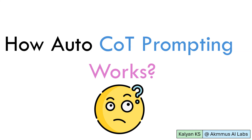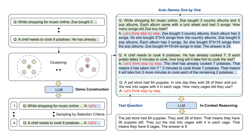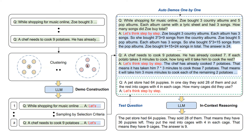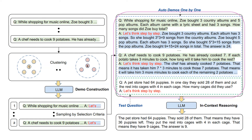Now let us see how Auto-COT prompting works. Auto-COT prompting involves three steps. The first step involves selection of diversified questions — that is, questions are clustered, and then representative questions are selected from each cluster, so that the selected questions will be diverse. The second step involves automatic generation of reasoning chains using the magical phrase 'let's think step by step' for the selected questions. The third step involves using diversified questions along with automatically generated chains as examples, similar to COT prompting.